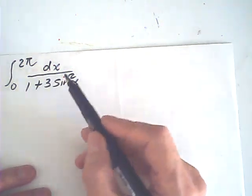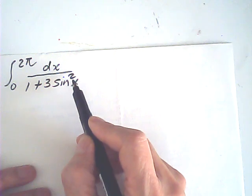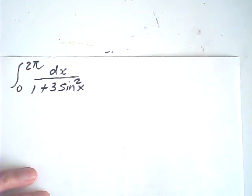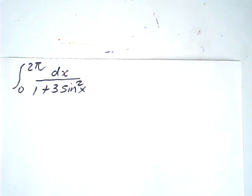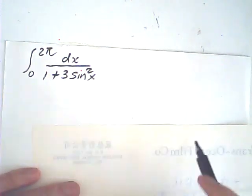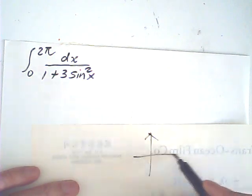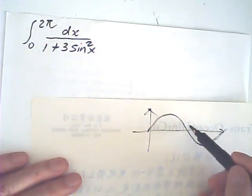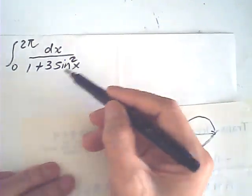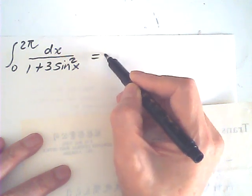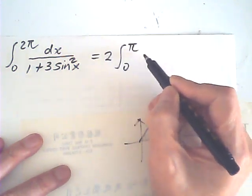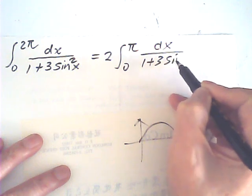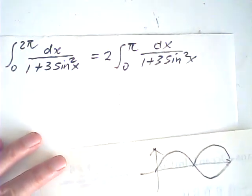Now this one, because this is sine square, the sine function has a symmetry property. Therefore, we just do the same thing for the first part, so this becomes 2 from 0 to π, dx over 1 plus 3 sine square x.